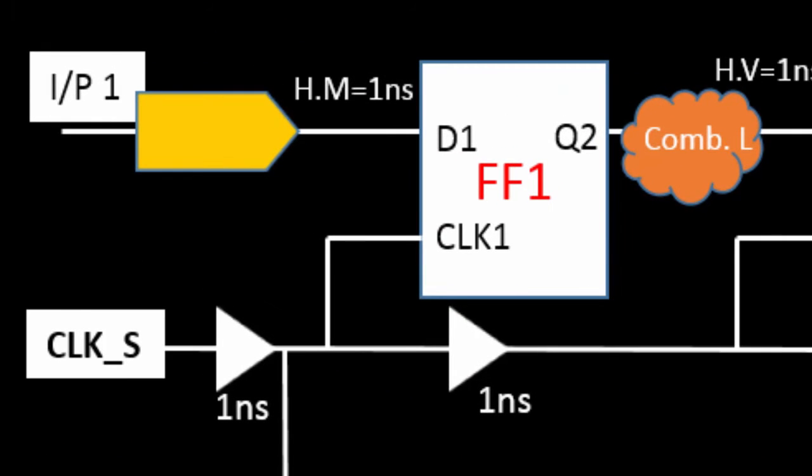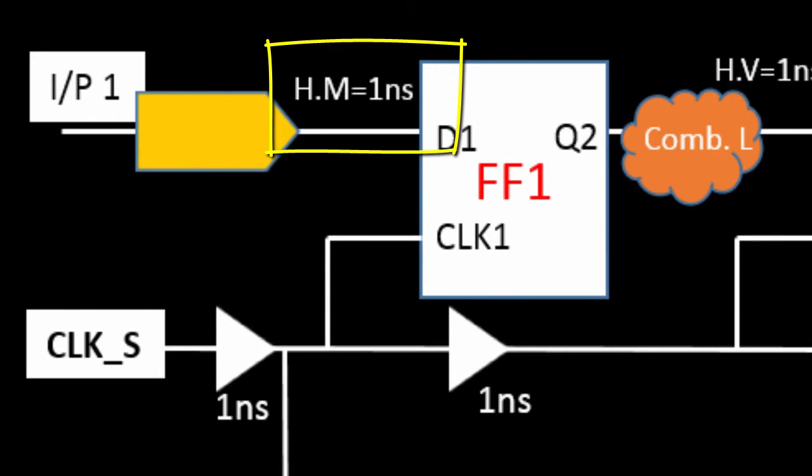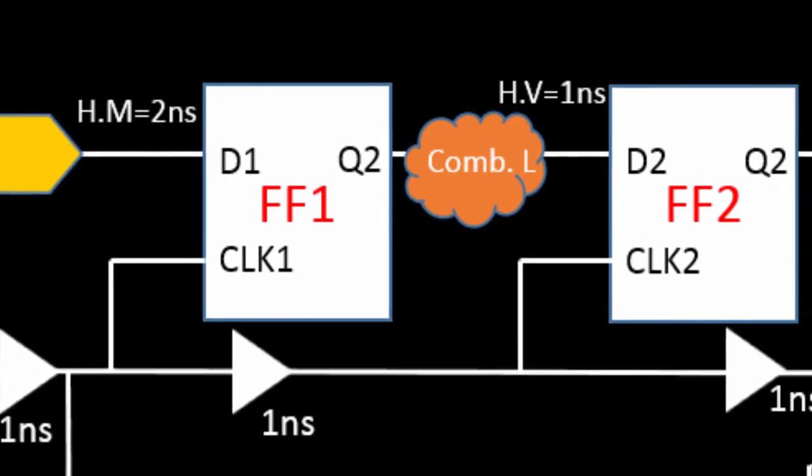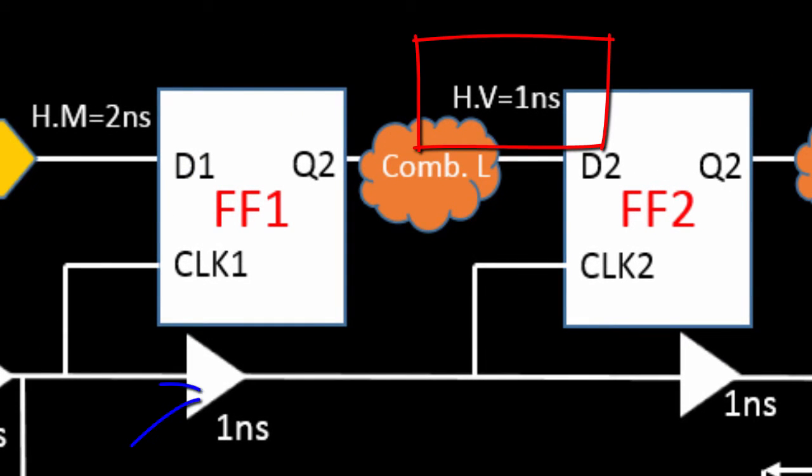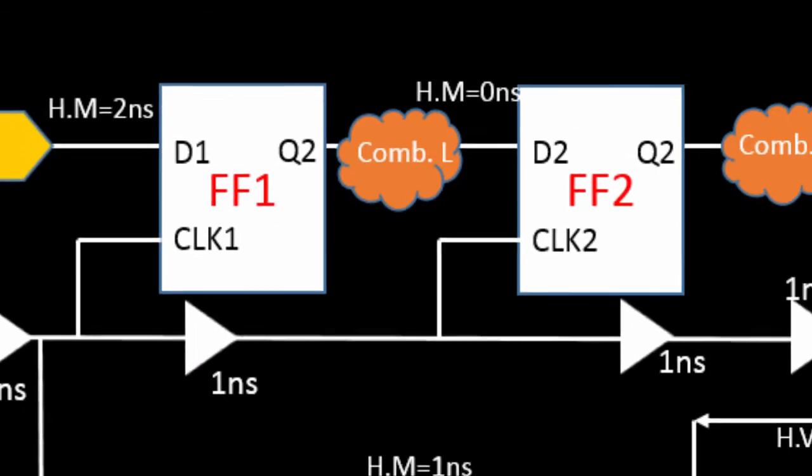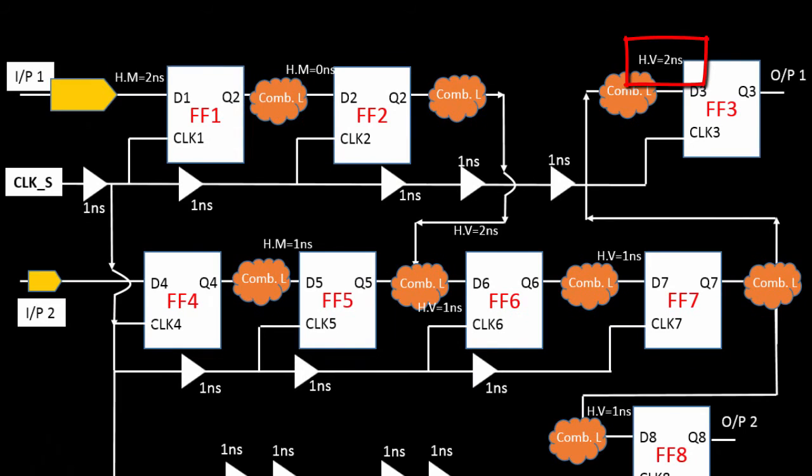Now let's see that what is going to happen with the hold violation or the hold margin value. Let's start from here. This is a hold margin. Initially, it was a hold margin of 1 nanosecond. Now it is going to increase from 1 nanosecond to 2 nanosecond because you have removed 1 clock buffer from the capture flip-flop. Similarly, this hold violation of 1 nanosecond become the 0 nanosecond margin.